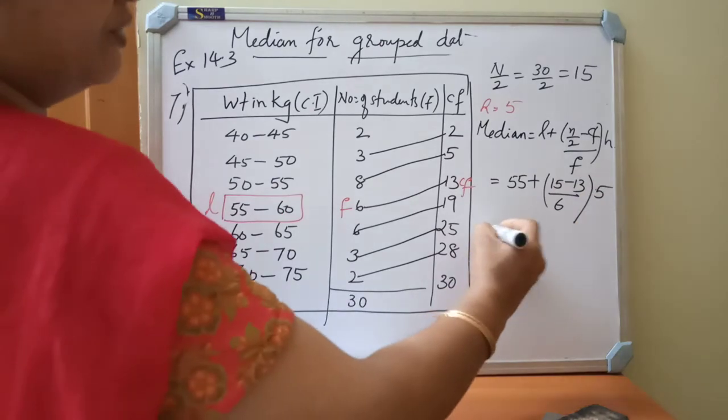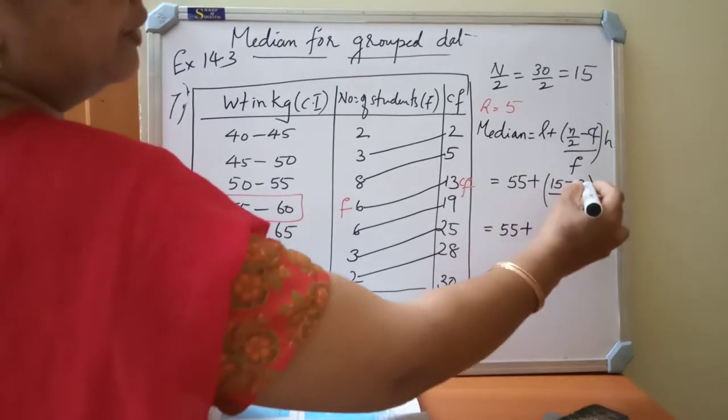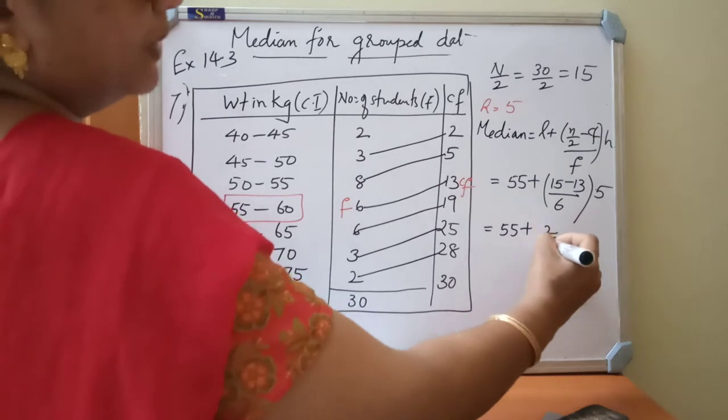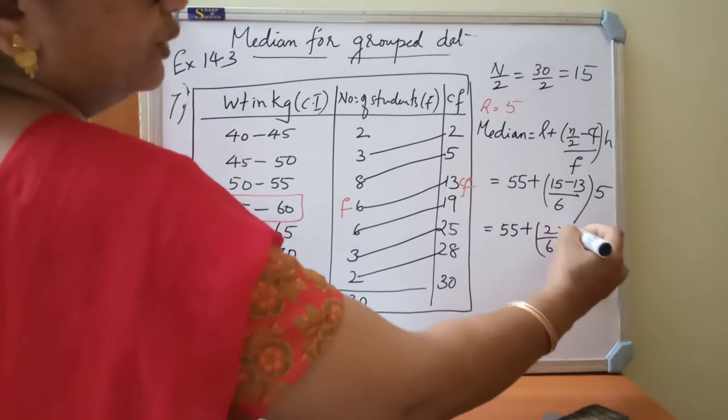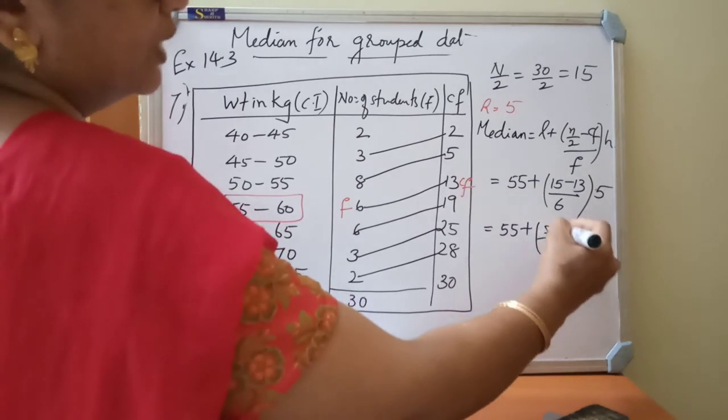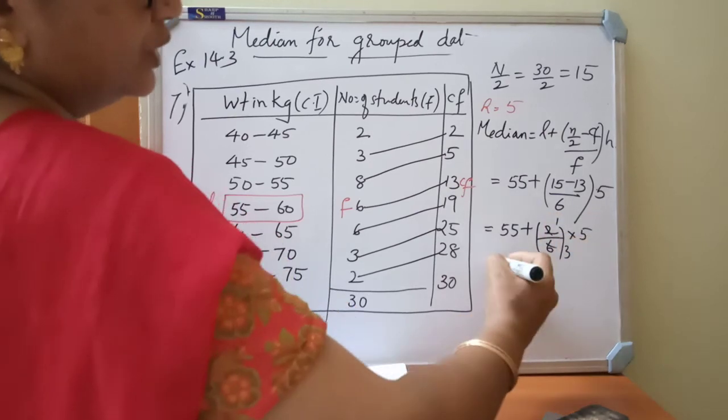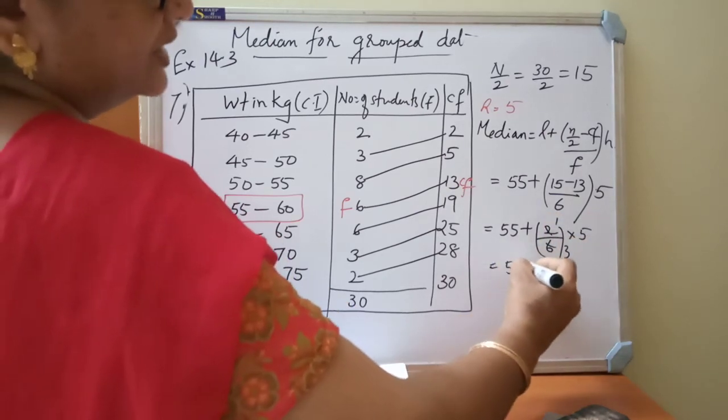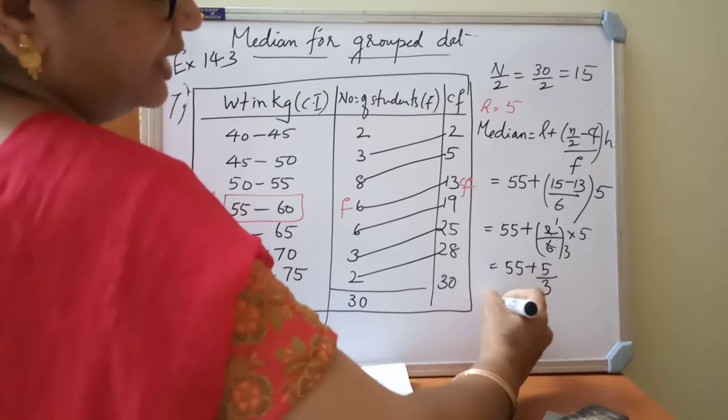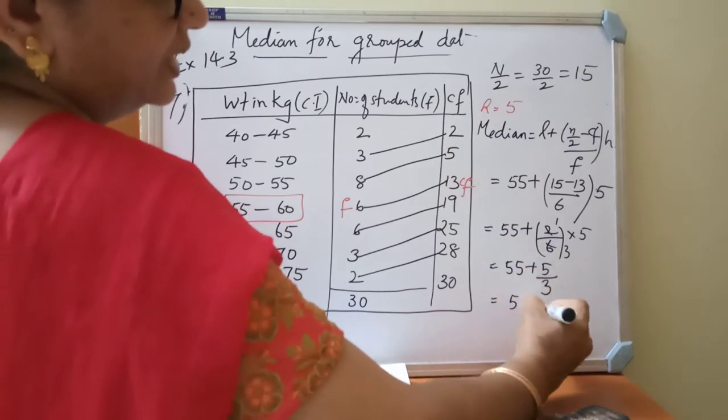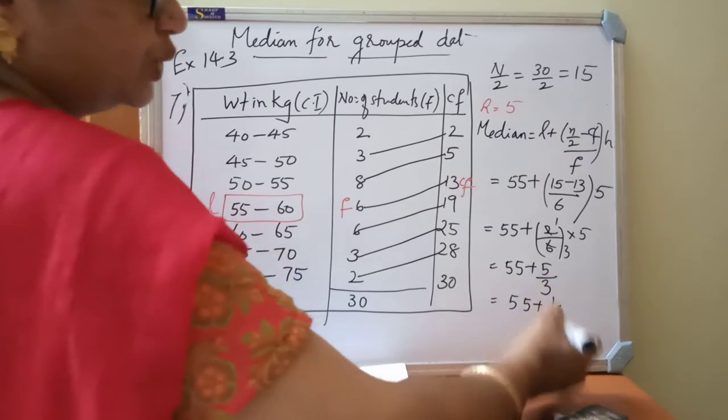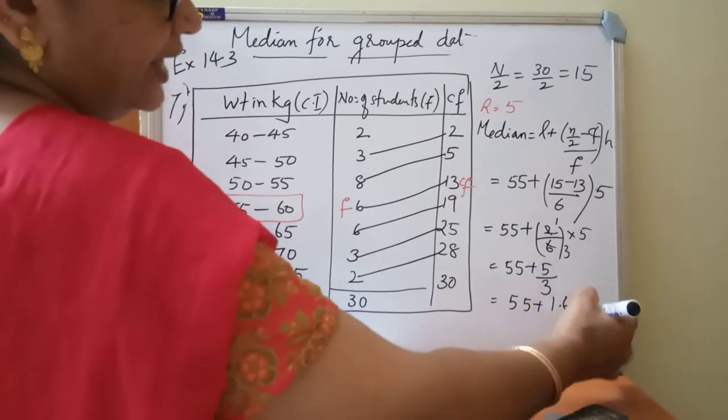So 55 plus, 15 minus 13, 2, 2 by 6, into 5. 2 by 6 is what? 1 by 3. So 55 plus, 5 by 3. 5 by 3 we can write, 55 plus, 1, 3 is 3, balance to 2 by 6.